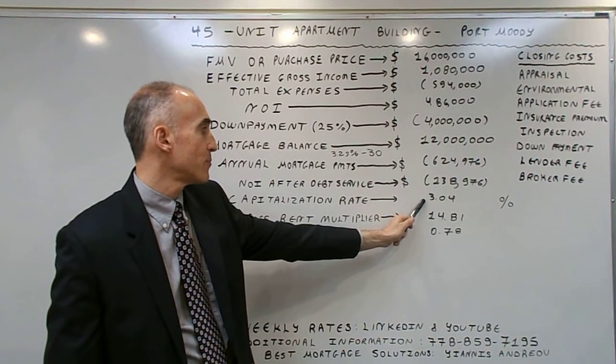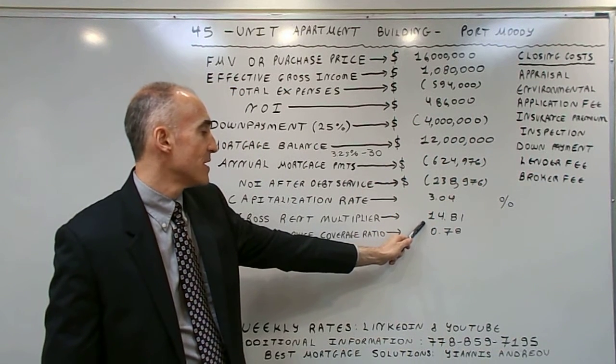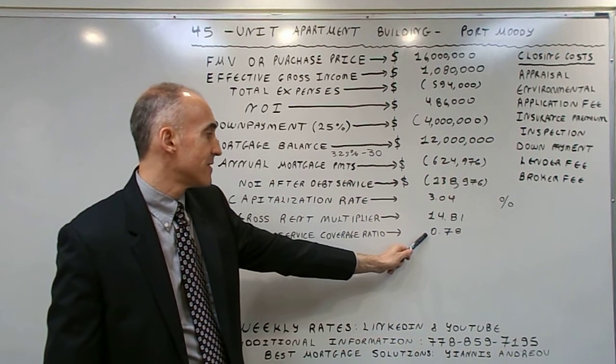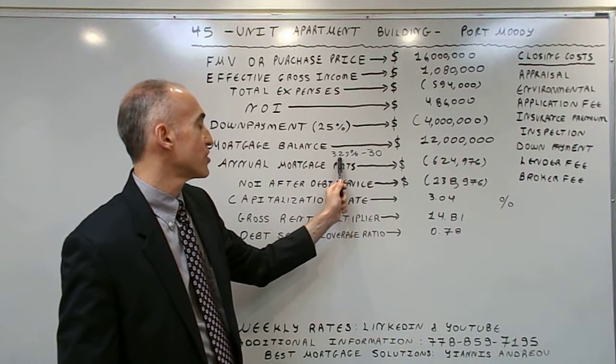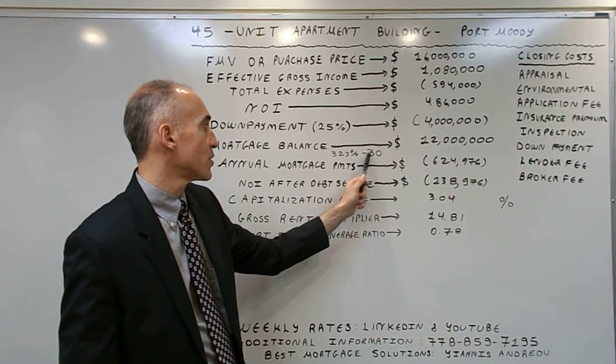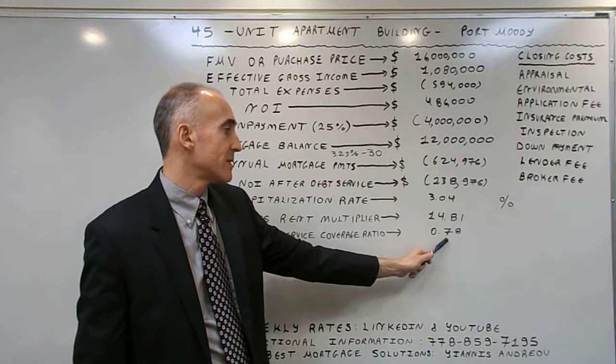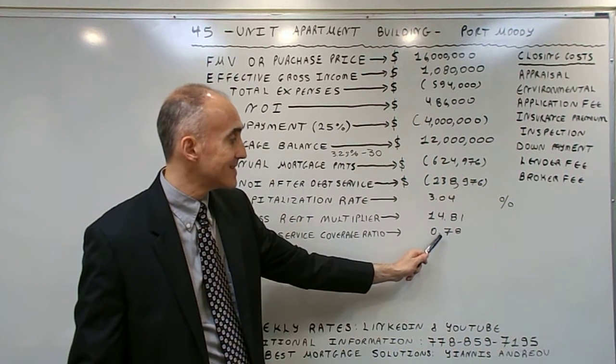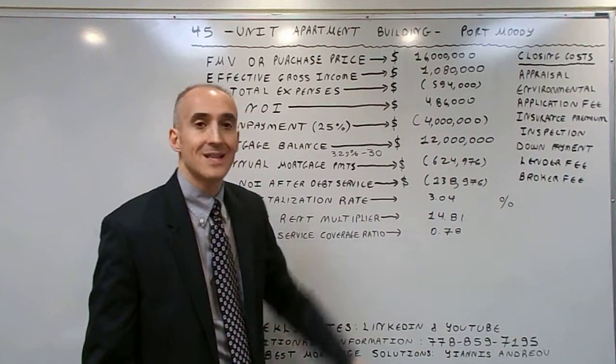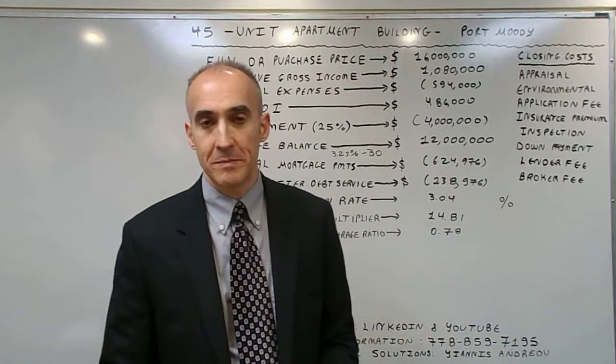The capitalization rate is 3.04%, the gross rate multiplier is 14.81, and the debt coverage ratio is 0.78. We are able to secure a rate of 3.25% over 30 years because, despite the fact the debt coverage ratio is under 1.15, it is 0.75, which allows us to qualify with a B lender.